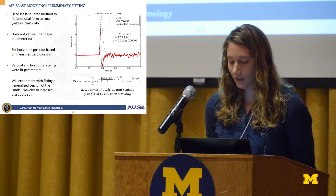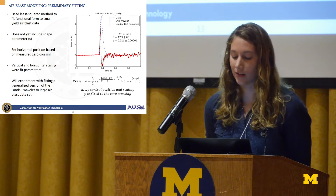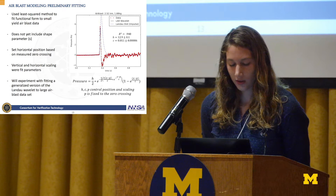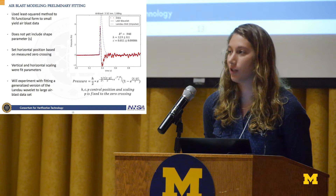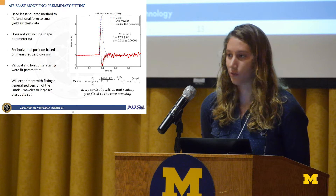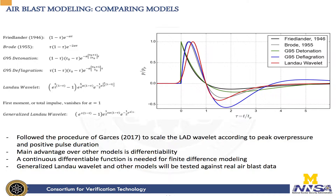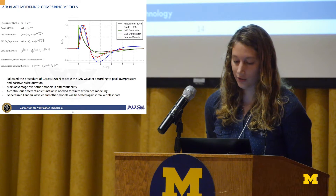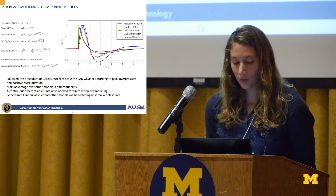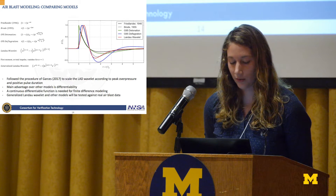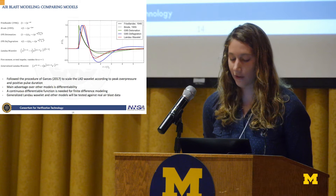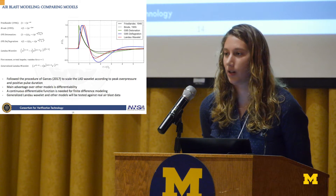To fit the model, I set the zero crossing at the measured zero crossing and then scaled vertically and horizontally. In the future I'll experiment with fitting a more general version of this function to a large air blast data set provided by Lawrence Livermore. This plot shows a comparison between the new model and various older air blast models, with the red one being the new one. The main difference between this and older models is that it's continuous and differentiable. Traditional air blast models have been discontinuous to capture that sharp onset, which can cause problems if you want to use the waveform in finite difference modeling — something the scientists at Livermore are interested in working on.